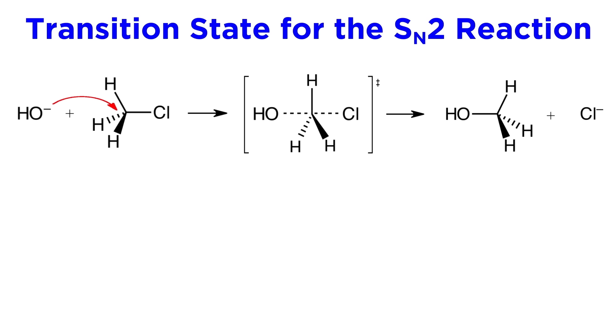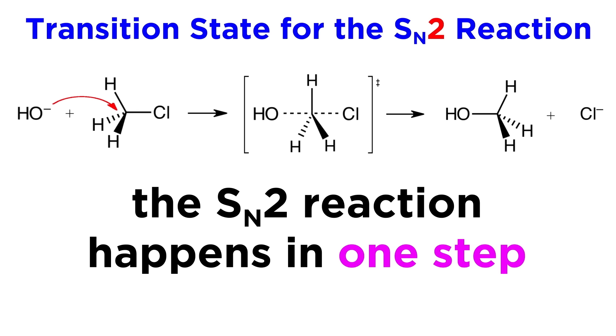This is where the 2 comes in. To avoid confusion, let's be clear that the 2 has nothing to do with how many steps take place in the reaction. This reaction happens in one step. It is a concerted reaction. The nucleophile coordinates, and the leaving group leaves all at once. The 2 refers to the transition state itself, and the fact that it is a bimolecular transition state.